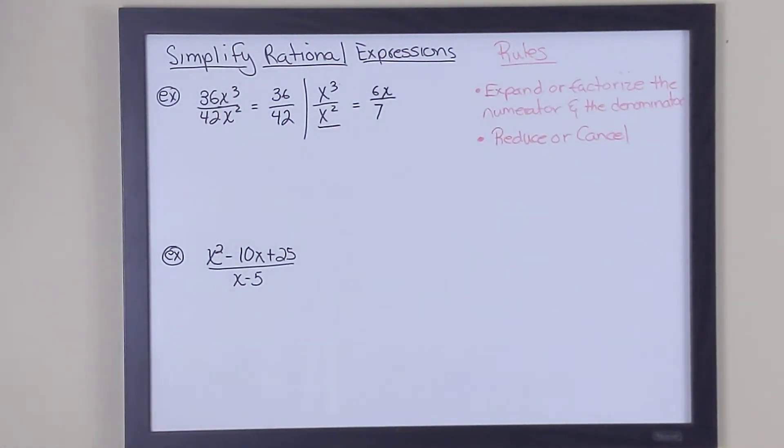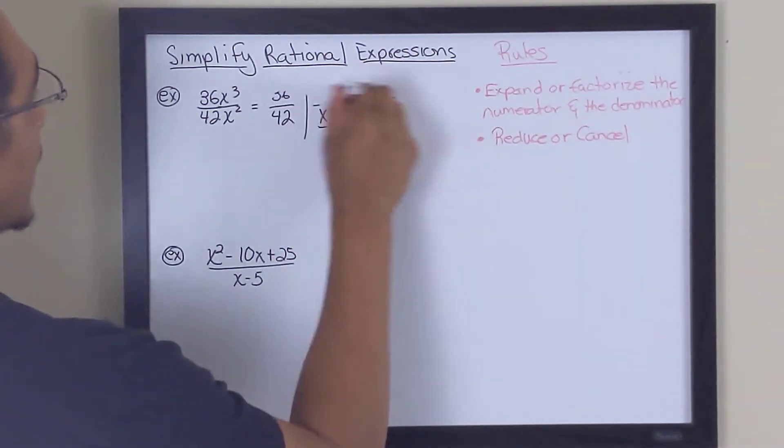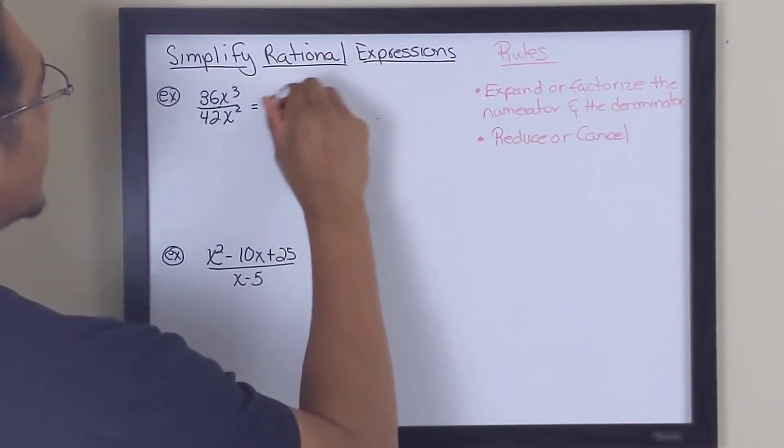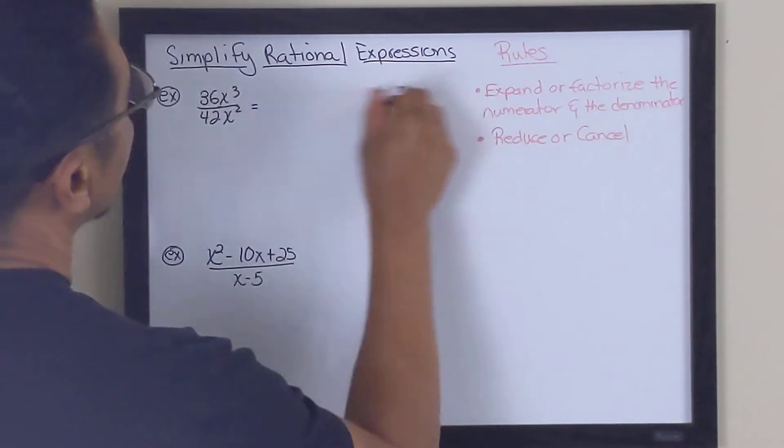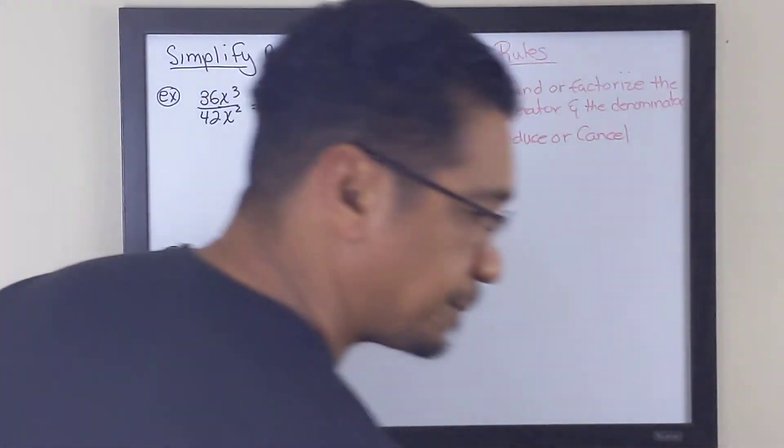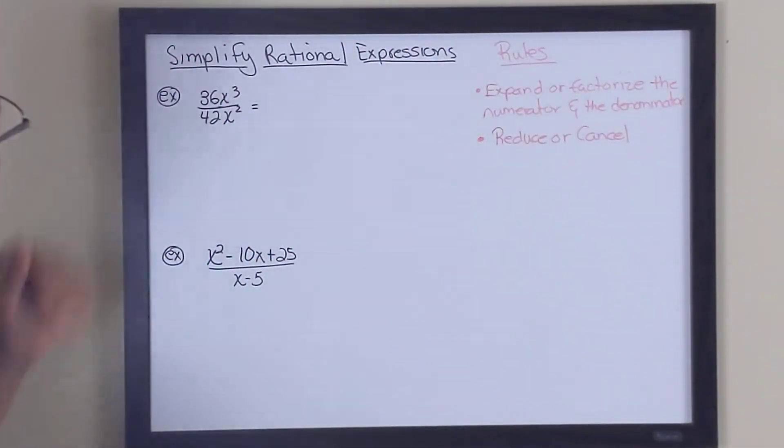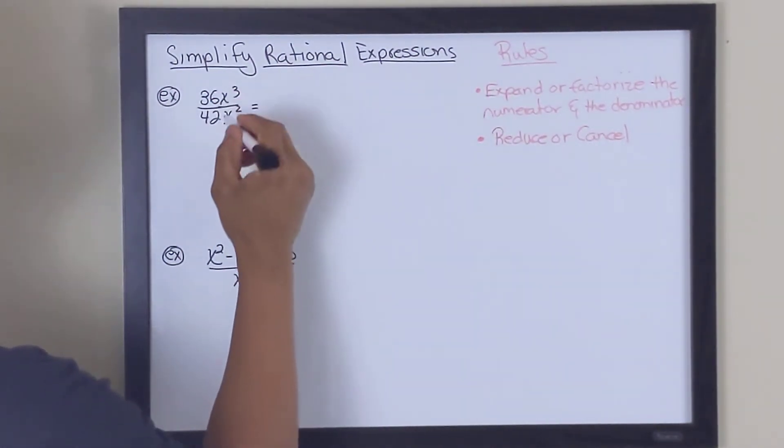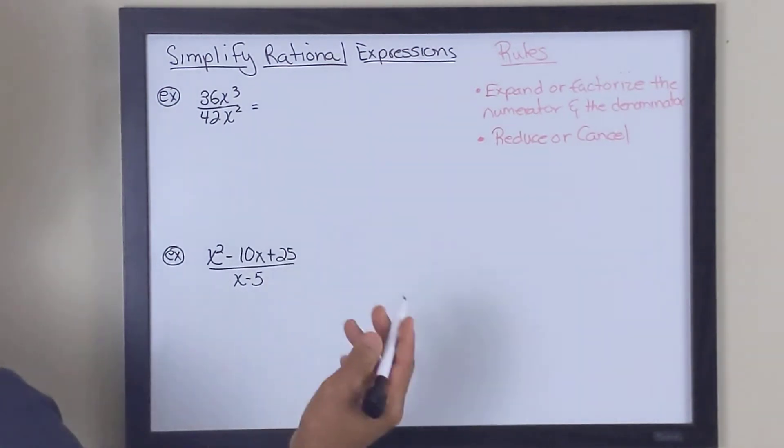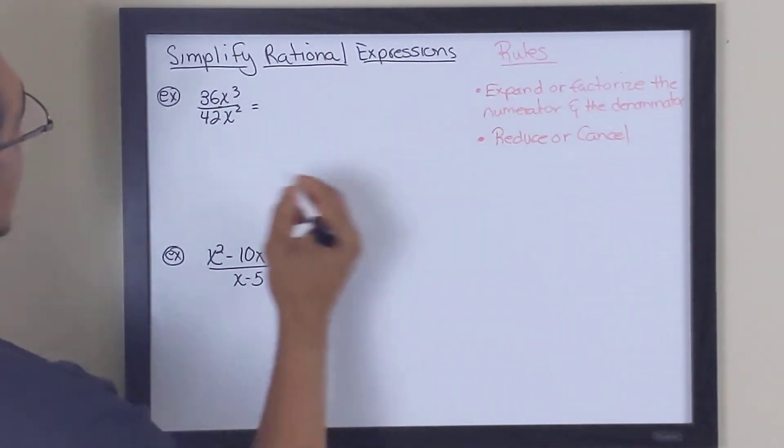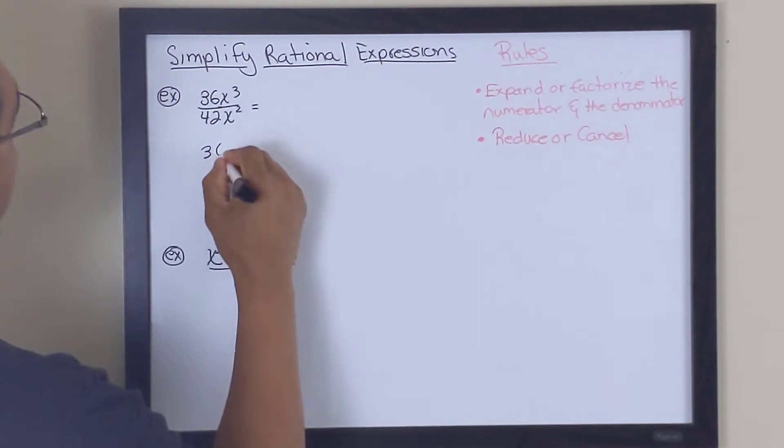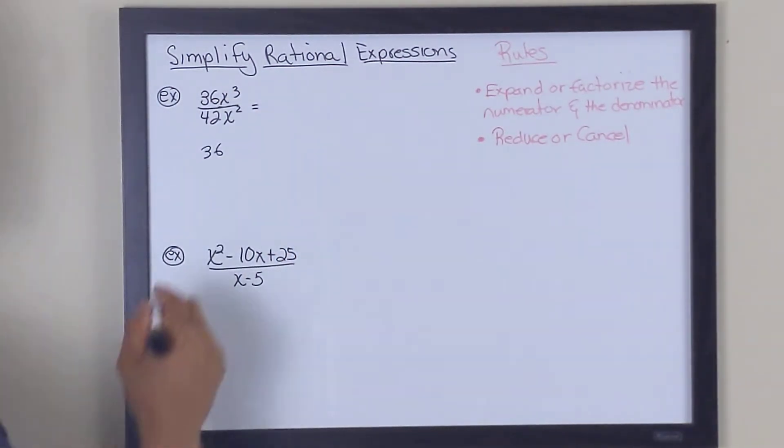Alright? So that's a more advanced way and it doesn't really show you what's going on how to actually solve this. Alright? So let me erase this for a minute and let me show you another way of solving this. And we tend to call this expansion. Alright? And we're going to reduce this fraction by expansion. And what I mean by that is we take 36 and the x cubed and we expand it in its prime numbers. So first thing we're going to do is we'll take 36.